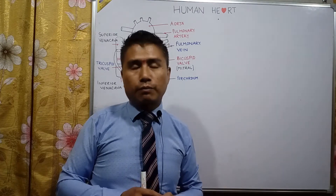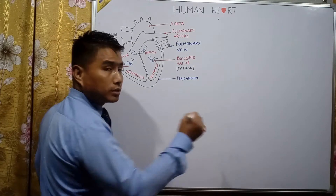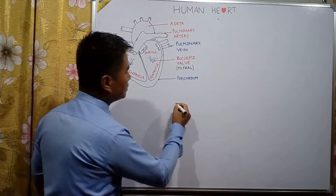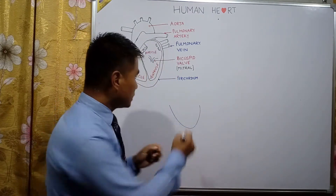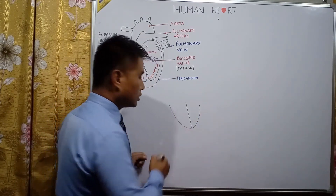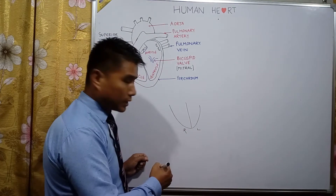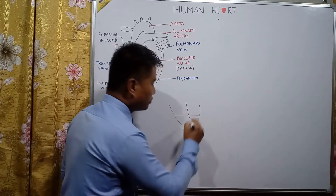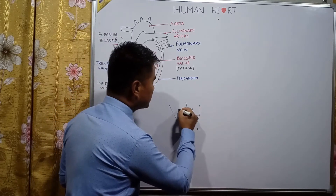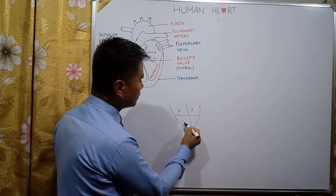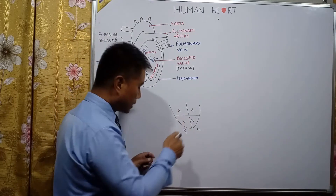The human heart is divided into two parts — the left part and the right part. According to the chambers, the upper chambers are known as auricles and the lower chambers are known as ventricles.